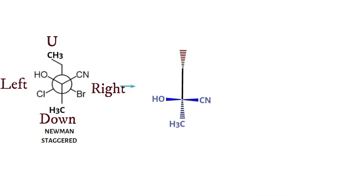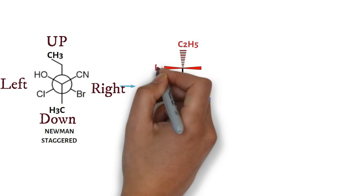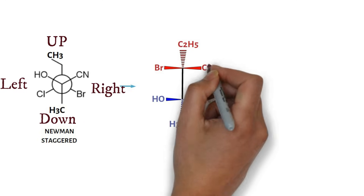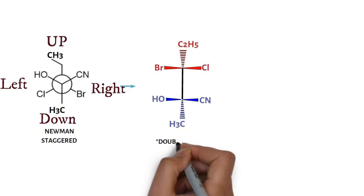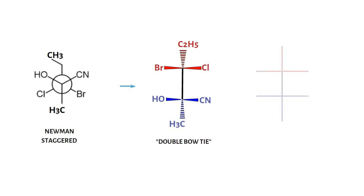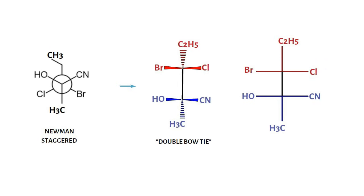On the back carbon, ethyl goes up but is written on dashes. Bromine is on the right but is written on the left side. This is because we are directly converting staggered into eclipsed. This double bow tie is directly reproduced as Fischer projection without any changes.